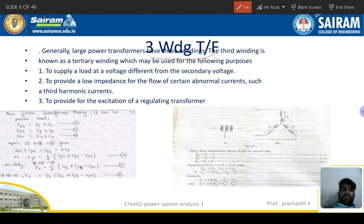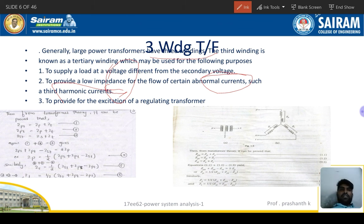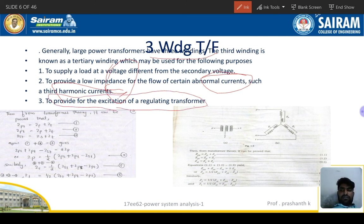In the three-winding transformer, when there is a difference between supply voltage and secondary voltage, low impedance allows certain abnormal currents to flow. Third harmonics can also be present. If a fault occurs on the output side or input side, heavy current flows through the transformer and it can get damaged. That is why the transformer provides low impedance for certain abnormal conditions. The transformer is also used for excitation and regulation purposes.